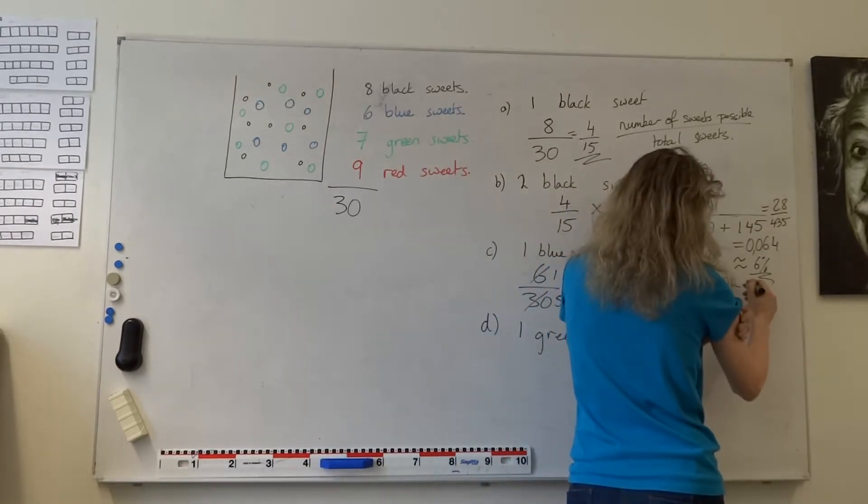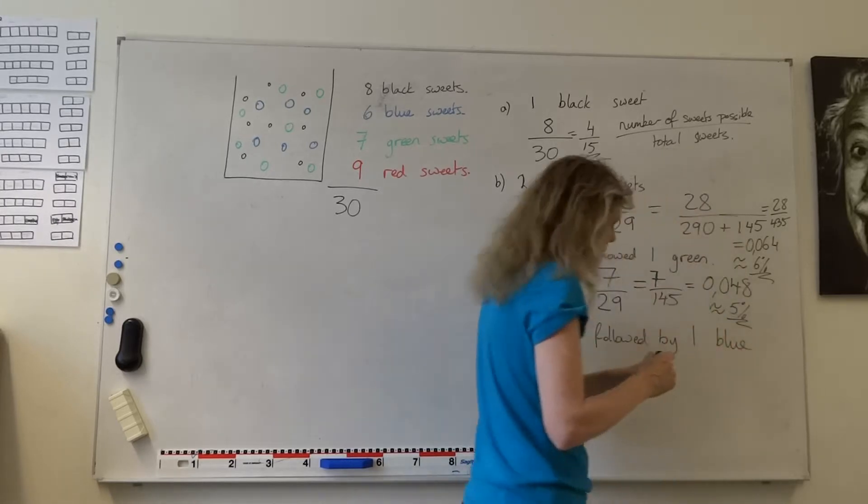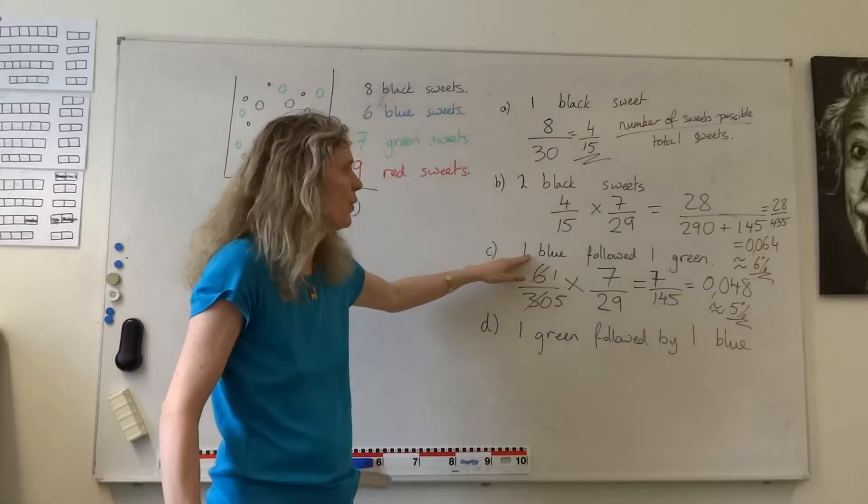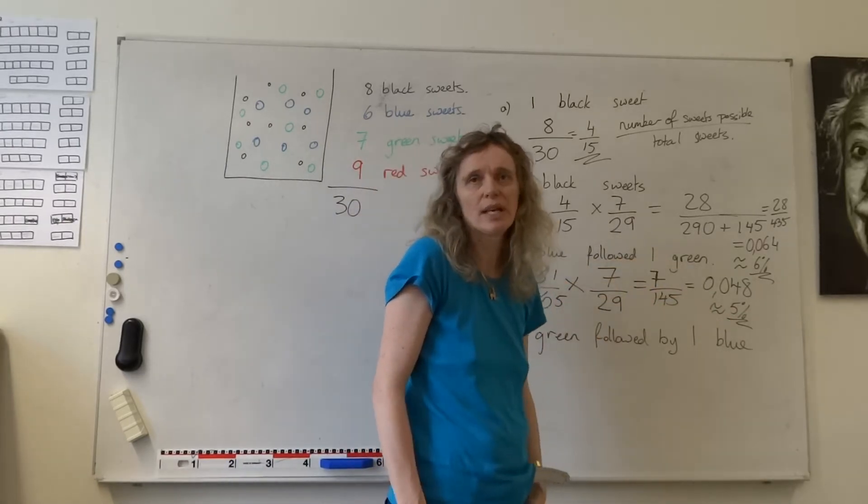As a decimal? 0.048. So approximately 5%. So the chance of me getting first a blue, followed by a green, approximately 5% chance of me getting that.